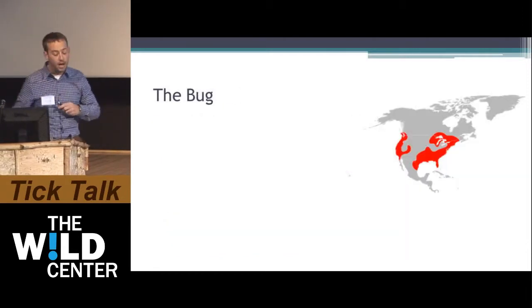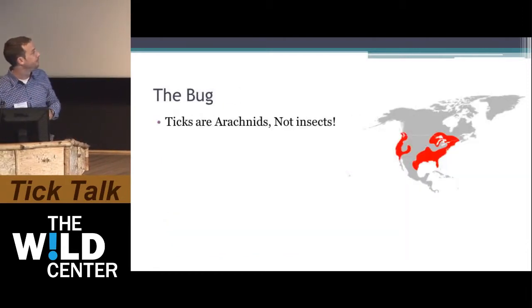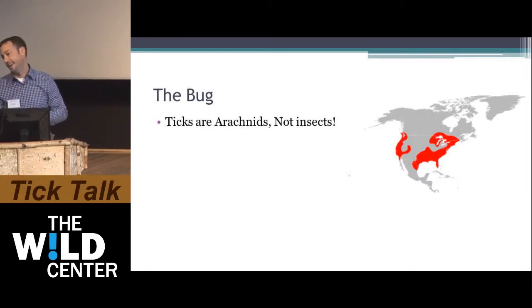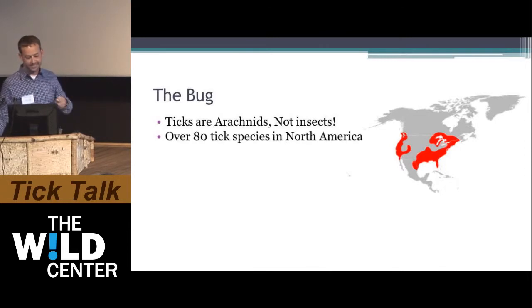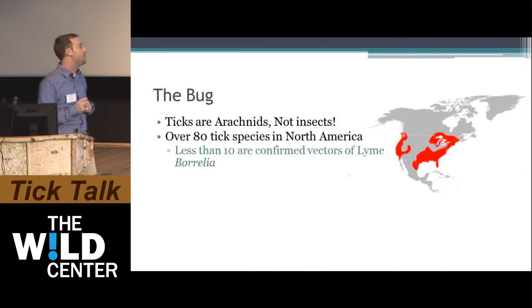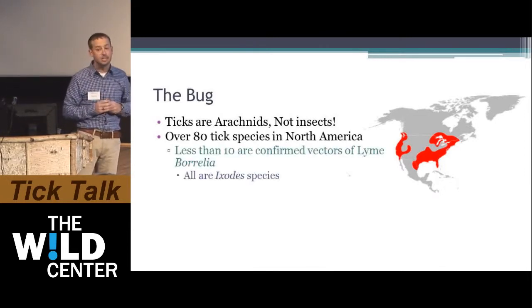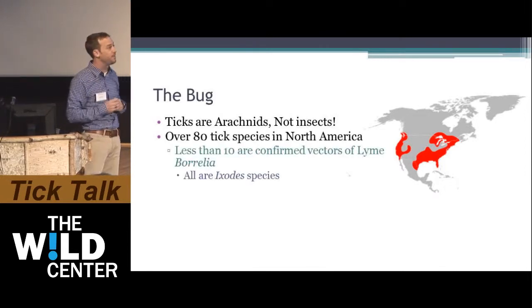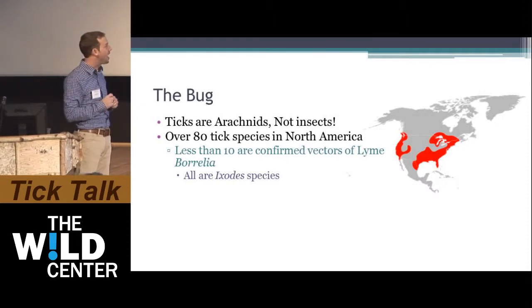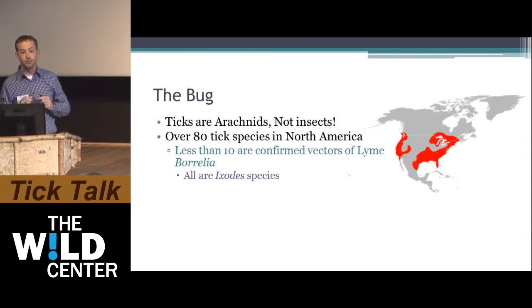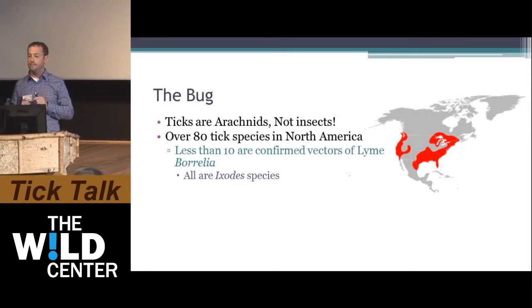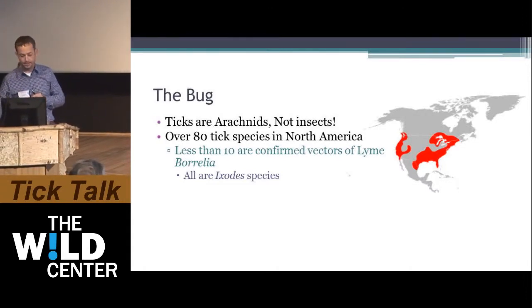Let's talk a little bit about the bug. They're actually not insects — they're arachnids. So when you call it a bug, it's truly not a bug; it's more like a spider. There are actually over 80 tick species in North America, 200 worldwide. But less than 10 of them have been confirmed as true vectors for Lyme Borrelia, and all of the confirmed vectors are Ixodes species.